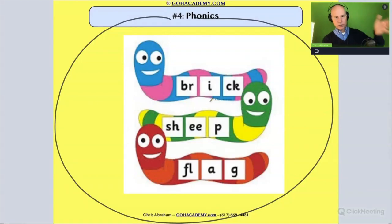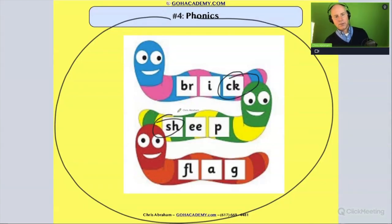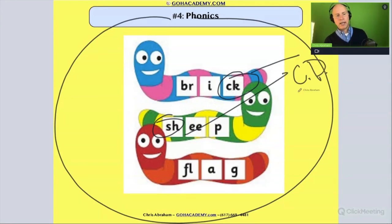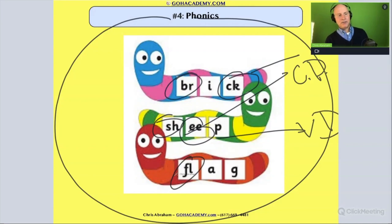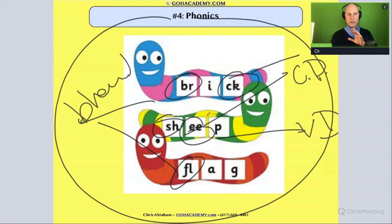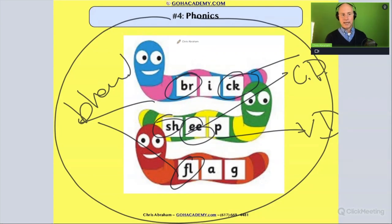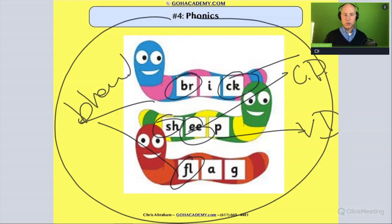Here we can look at these words and see that there are some vowel digraphs and consonant digraphs going on. We have a vowel digraph, we have some blends — these words all have those elements. There's some combination of phonics you can spot. These are the things going on in these words.